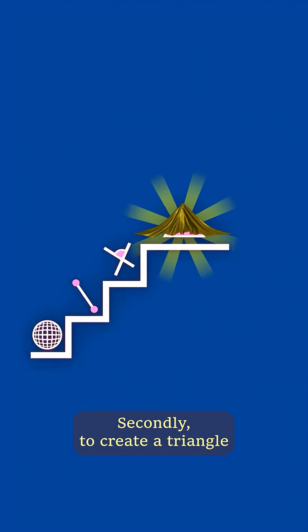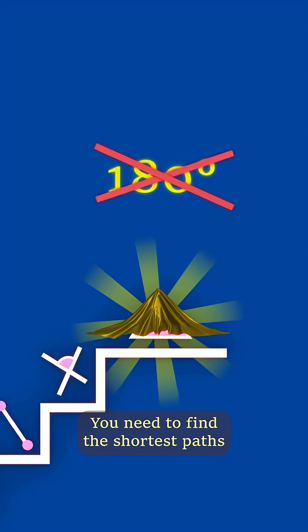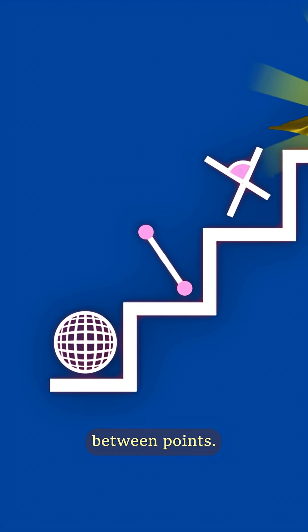Secondly, to create a triangle with an angle sum different from 180 degrees, you need to find the shortest paths between points.